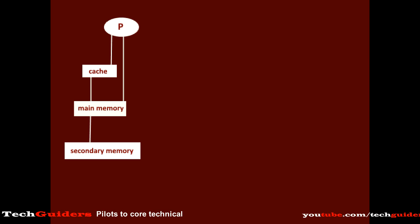When the processor refers to a word using an address, it will first search in the highest level — here it is cache. If found, the word will be transferred to the processor. If not found, then the entire block containing the word will be transferred from the lower level — here from main memory to the cache — and meanwhile the word will be transferred to the processor too. And if the search word is not even found in the main memory, then the block containing the word will be transferred from the next lower level — here from secondary memory to main memory and then to cache — and meanwhile the requested word will be transferred to the processor.